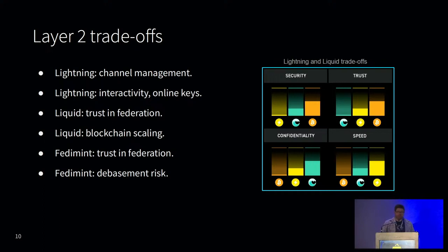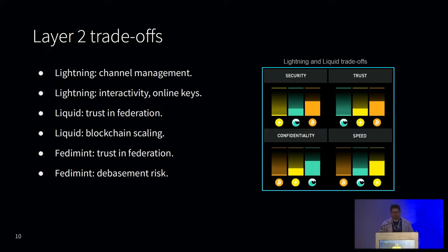On Liquid, you're trusting the federation with custody — at least 11 of the 15 functioning operators have to honor your peg-out transaction to get back to the main chain. They have economic and reputational incentives to ensure that happens, but there's still a trade-off. There's only ever been one issue with block production on Liquid, which was in 2021 during the Dynafed hard fork, caused by a bug that was quickly resolved and not through any censorship. That upgrade changed the ability for Liquid to swap in and out members of the 15-member federation if necessary. Since it's also a blockchain, Liquid can have similar scaling issues to Bitcoin, but it's more feasible to make scalability improvements on the sidechain.